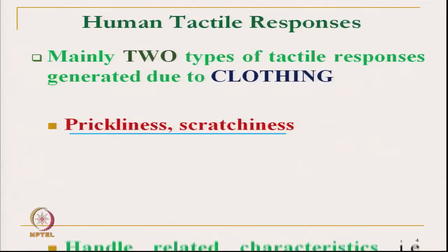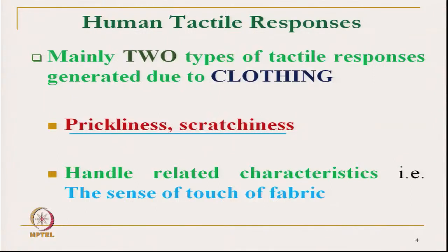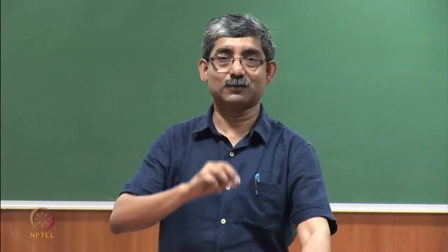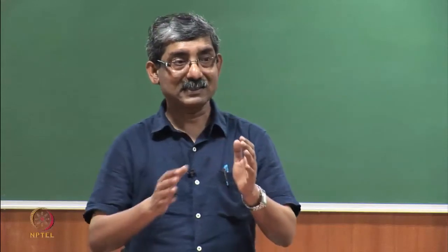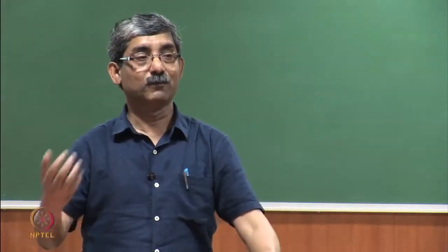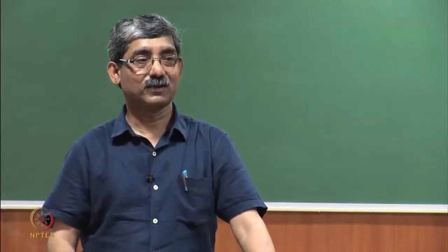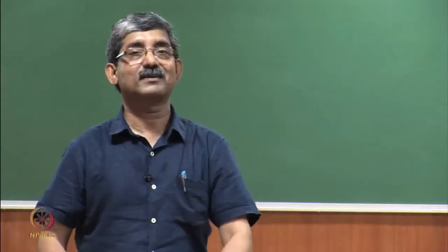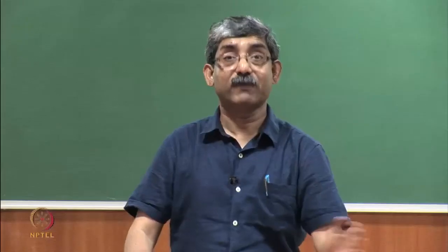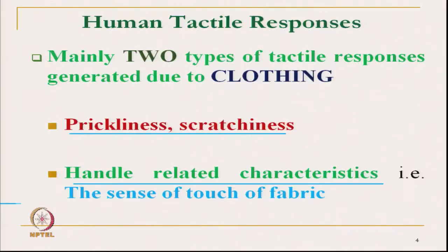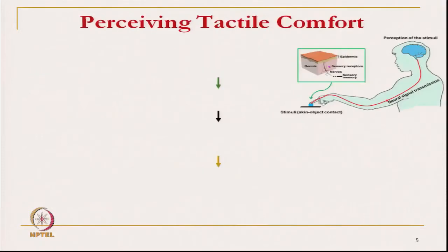The next aspect is fabric handle-related characteristics, which is actually the sense of touch or pressure. As we discussed in the earlier segment on neurophysiological sensation, we receive different types of touch signals, but effectively this sensation is received through the fabric's mechanical characteristics. Here we will discuss what those mechanical characteristics are, how to evaluate them, and what factors affect them. Handle-related characteristics are basically the sense of touch.